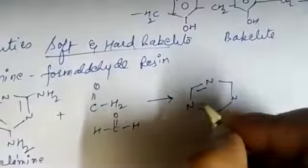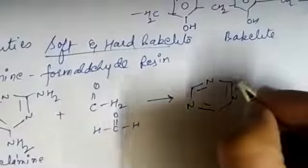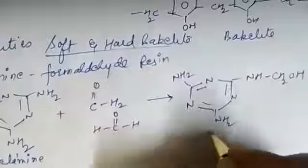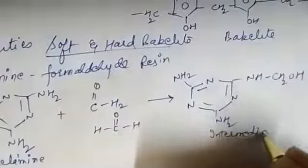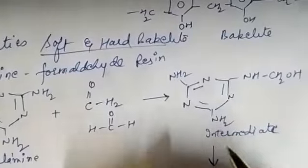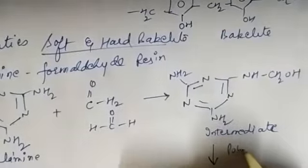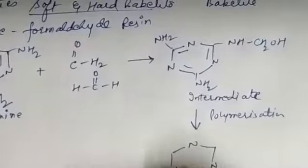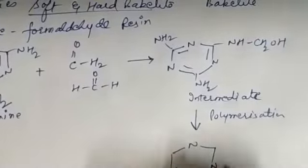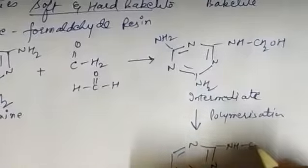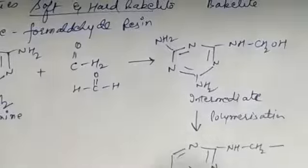The intermediate (–NH–CH₂OH) gets converted into the final polymer upon polymerization. After polymerization, the product of melamine formaldehyde resin has –NH–CH₂– linkages. The molecule can be extended on all three sides of the melamine ring, giving it a highly crosslinked network structure.